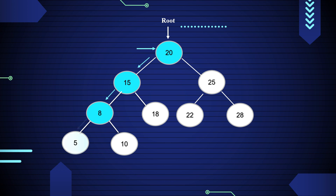5 has no subtree, so print 5 and move to the right subtree of 8. There is a 10 that has no subtree, so print 10. Then move to the right subtree of 15; there is an 18 that has no subtree, so print 18. Then traverse the right subtree of 20. There is a 25; print 25 and traverse the left subtree of 25. There is 22 that does not have any child, so print 22.